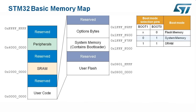When invoking the system memory bootloader, the starting address is from the internal ROM memory located at hexadecimal 0x1FFF000. Booting from internal ROM memory will invoke the onboard bootloader over the serial protocol. When booting from SRAM, the starting address is hexadecimal 0x2000000.